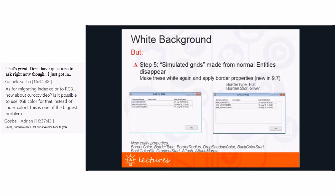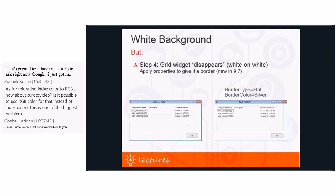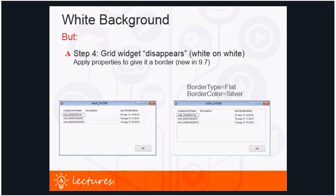Again there is tooling — the tool is called 'u97 grid border'. This one was kept very simple: it just retrieves all the entities that are painted as grids and has a button to add the border properties to them. I will show this tool in the demo later.